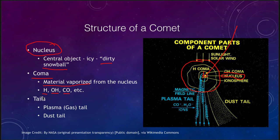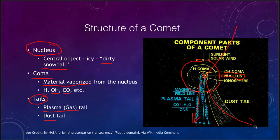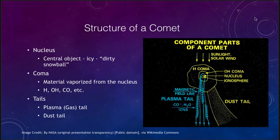And finally we see the tails of a comet. Comets have two tails — they will have a plasma or gas tail and a dust tail. We can see the plasma tail going straight back and the dust tail curving off to the side. Let's look at those in a little bit more detail.